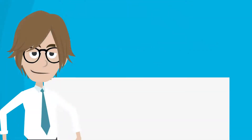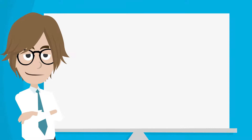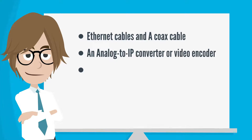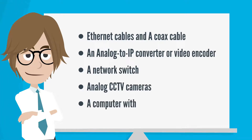Before that, you need to get these things ready: Ethernet cables and a coax cable, an analog-to-IP converter or video encoder, a network switch, analog CCTV cameras, and a computer with video management software.